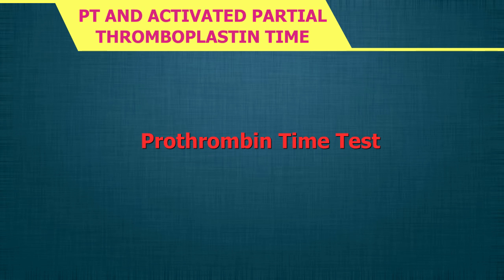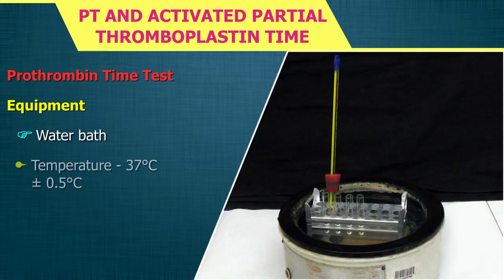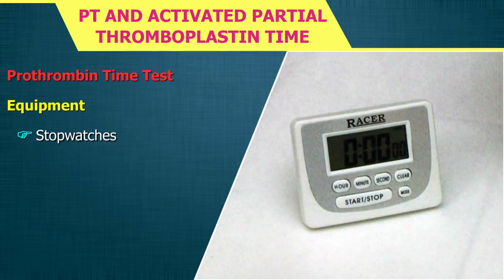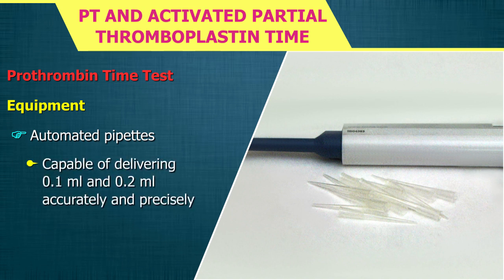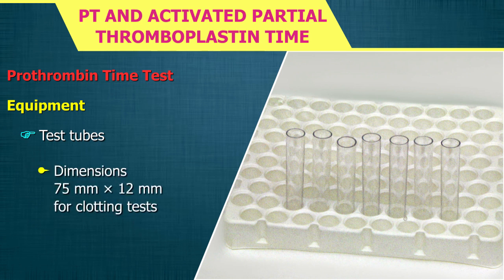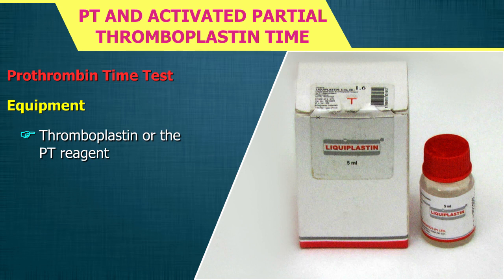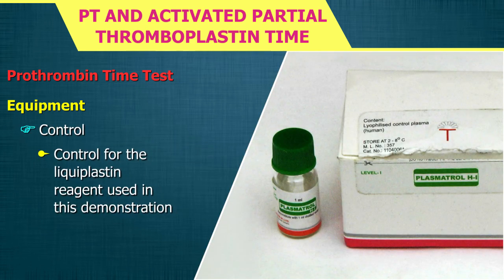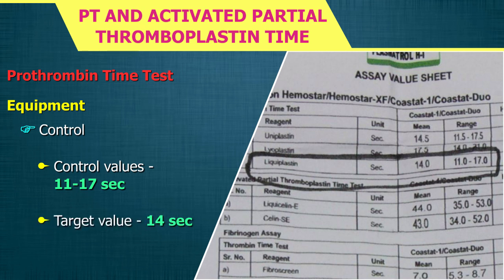The PT test should be performed in a well-lit room to observe clot formation. Equipment required: a water bath maintained at 37°C ±0.5°C, stopwatches, automated pipettes capable of delivering 0.1 ml and 0.2 ml accurately, pipette tips, clean 75×12 mm test tubes and a rack, thromboplastin or PT reagent, and controls. For the liquiplastin reagent used in this demonstration, control values are between 11 to 17 seconds with a target value of 14 seconds. Also required: patient citrated plasma specimens.